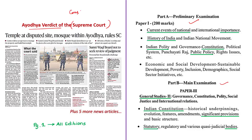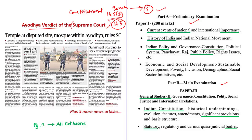The verdict was delivered by a five-member constitutional bench. As per Article 145(3) of the Indian Constitution, the minimum number of judges required to sit for deciding any case involving a substantial question of law as to the interpretation of the Constitution, or for hearing any reference under Article 143, shall be five.